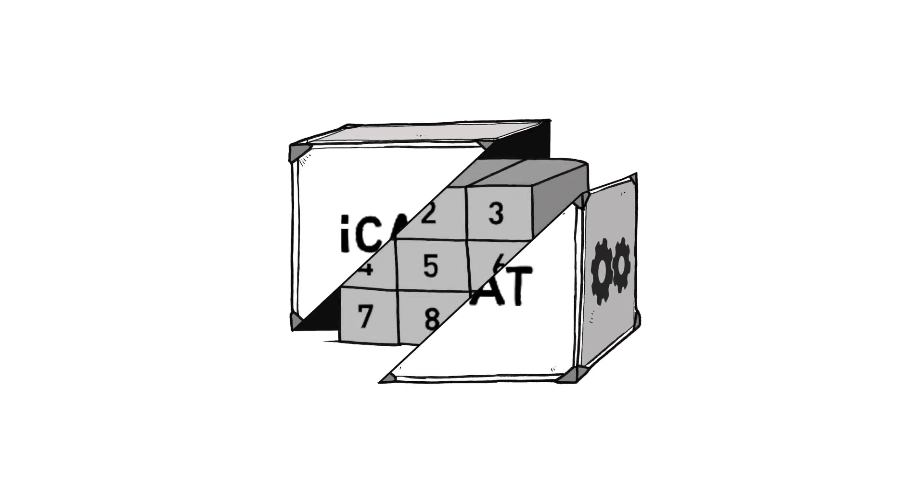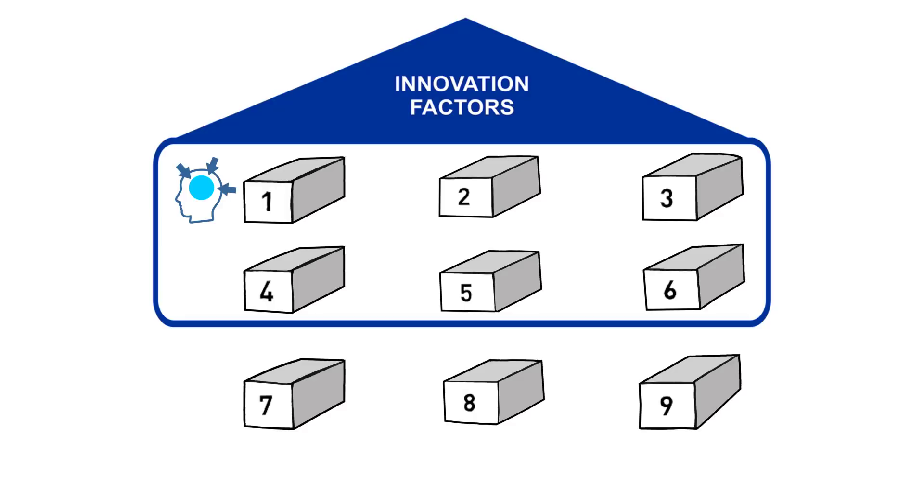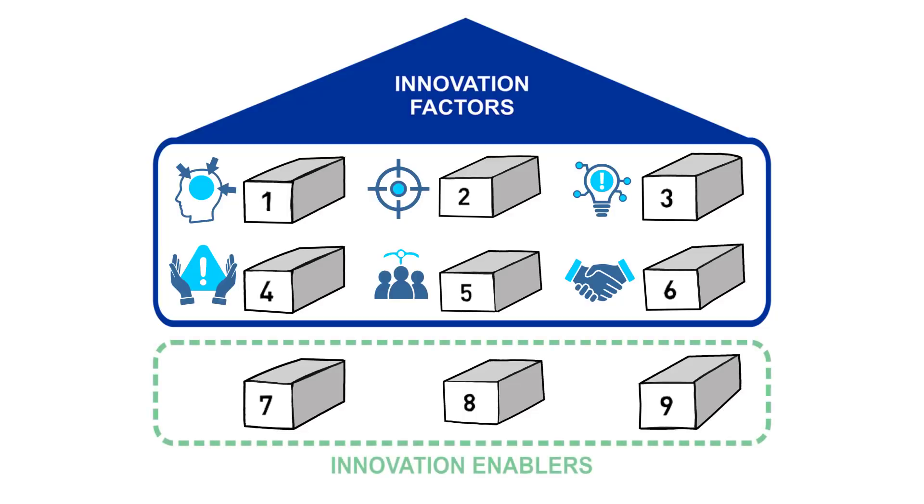The ICAT consists of nine building blocks: six innovation factors—openness to new ideas, opportunity recognition, new idea implementation, risk tolerance, teamwork and collaboration with external stakeholders—and three innovation enablers: leadership, resources and processes.